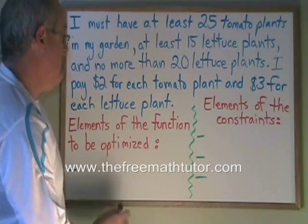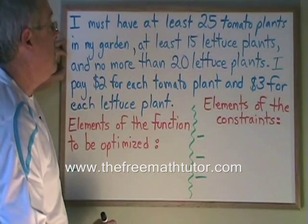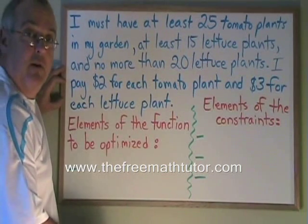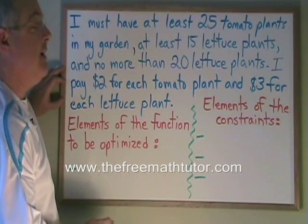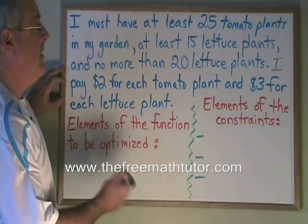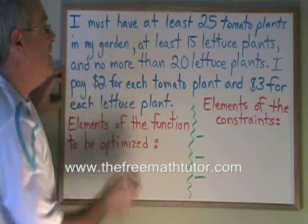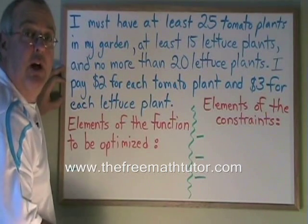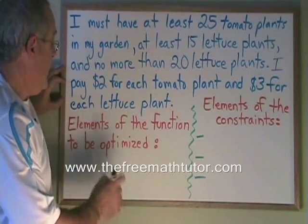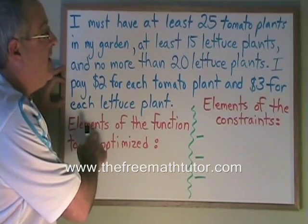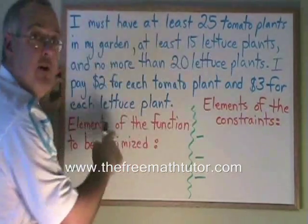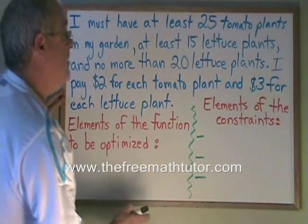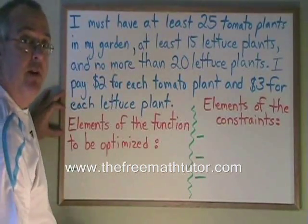When I am asked to get the elements of the function to be optimized, what I am asked to do is find the information that I would use to build my optimization function — my optimization equation — and that is always the information that has to do with money. I pay two dollars for each tomato plant and three dollars for each lettuce plant can be translated into a mathematical equation. But in this case, I am just being asked to give the elements — the information that will later be translated into a mathematical equation.